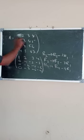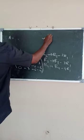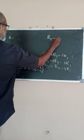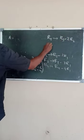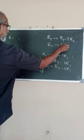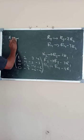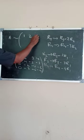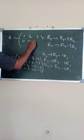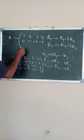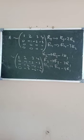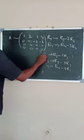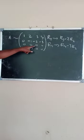The operations are R3 → R3 − 2R2 and R4 → R4 − 3R2. That gives: Row 1: (1, 2, 3, 4); Row 2: (0, −1, −2, −3); Row 3: (0, 0, 0, 0); Row 4: (0, 0, 0, 0). The third and fourth rows are all zeros. We stop here.